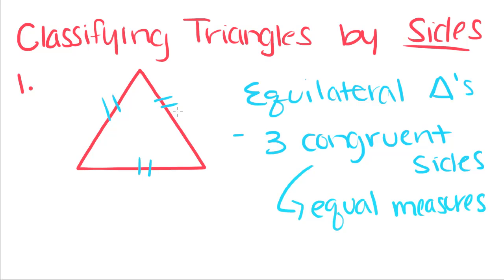We mark congruent sides by putting little tick marks on each side. These tick marks show that all three sides are congruent, because you can't just go off what they look like.